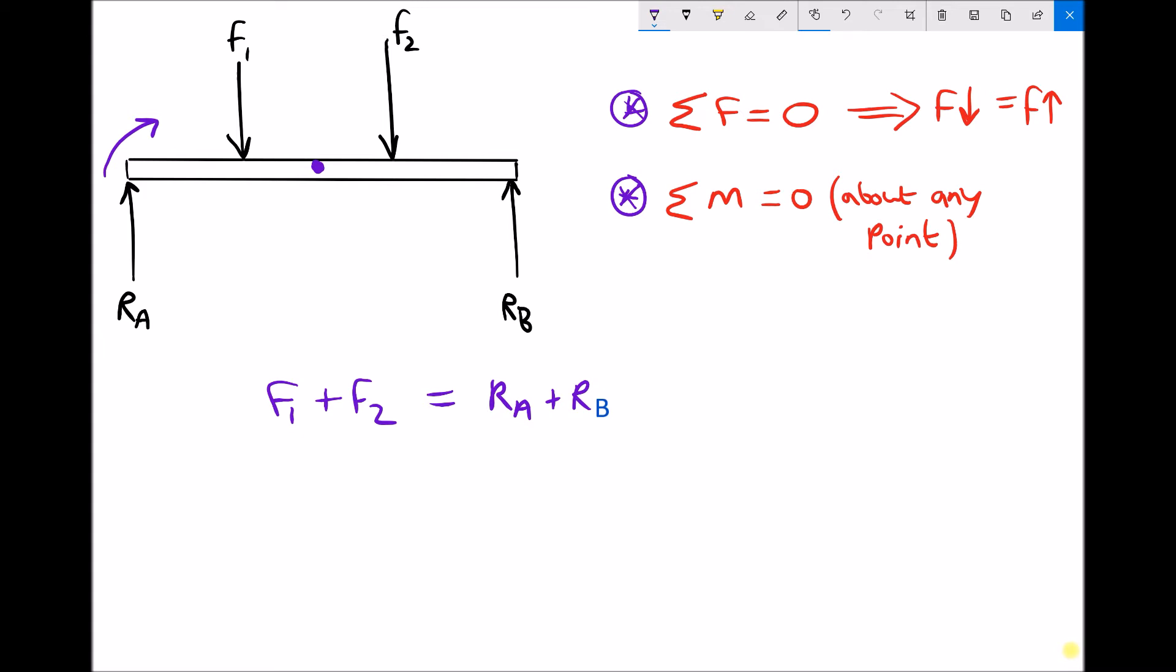F1 is trying to push the left side down so it's trying to turn it anti-clockwise. We've then got F2 trying to push the right side down so it's trying to turn the beam clockwise. And we've got Rb counteracting that and trying to turn the beam anti-clockwise.